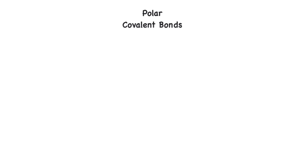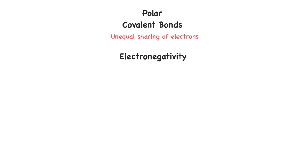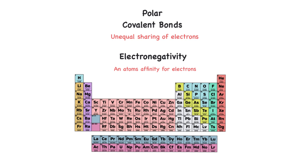Now let's look at polar covalent bonds. In polar covalent bonds, there is an unequal sharing of electrons. In order to understand this concept and how we can have polar versus non-polar covalent bonds, we have to understand what electronegativity is. Electronegativity is an atom's affinity for electrons — or how much that atom wants those electrons. This also coincides with the idea of the valence shell. An atom whose valence shell is closer to being full is going to have more electronegativity, or more want to have electrons, than an atom whose valence shell isn't close to being full.